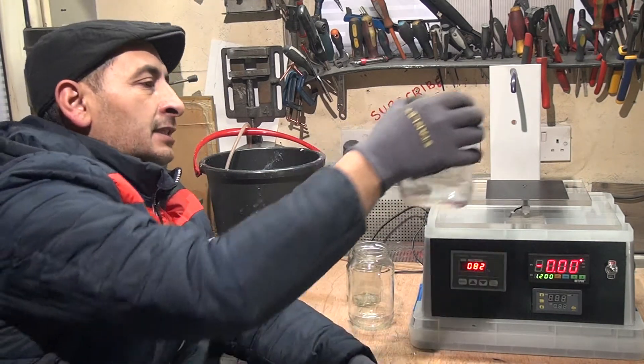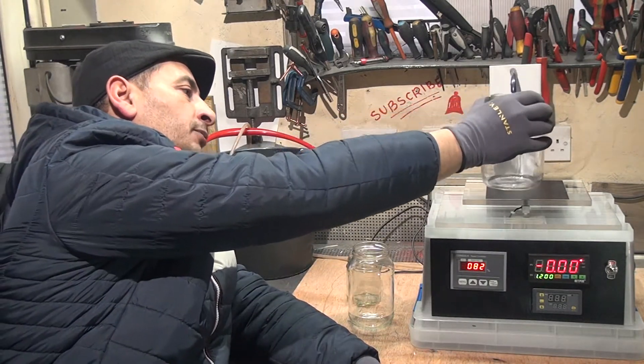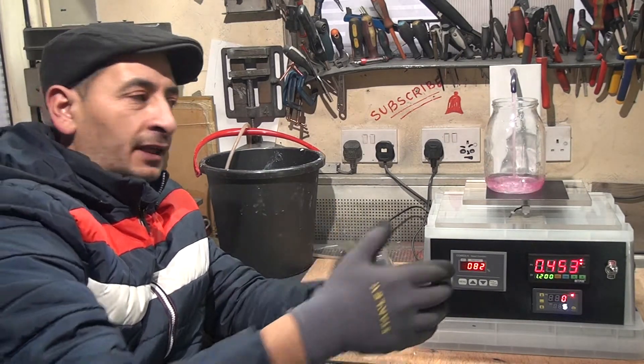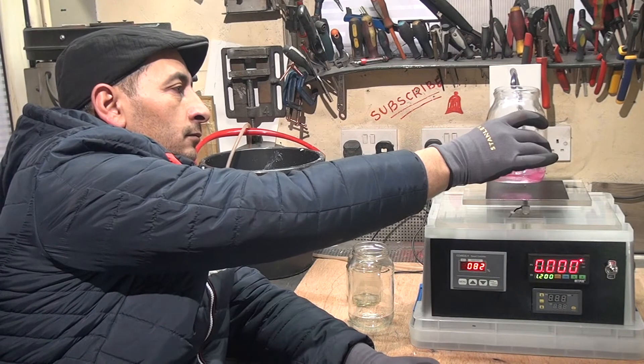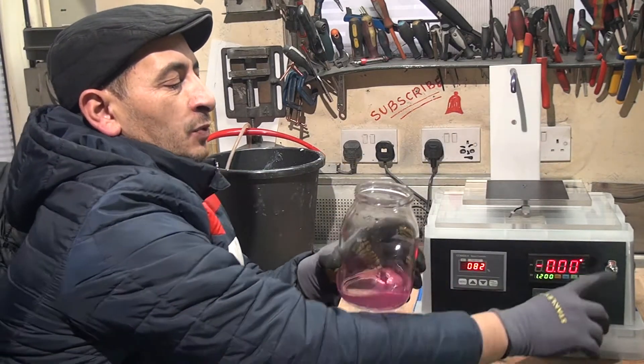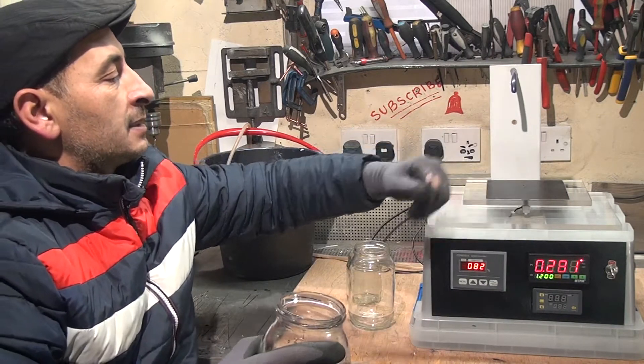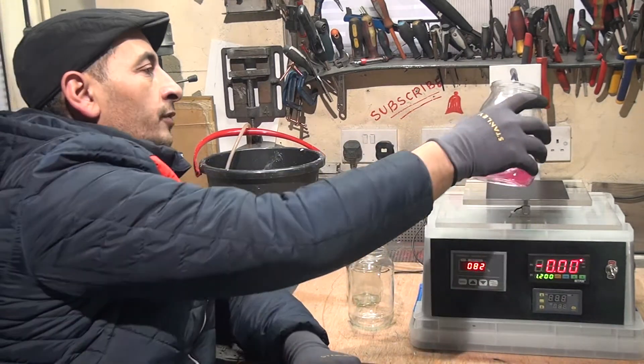The switch time relay is just to give me some time when I put my jar in here, like one second before it's starting. And I have here a switch for the pump if I want to clean this tray or the scale.